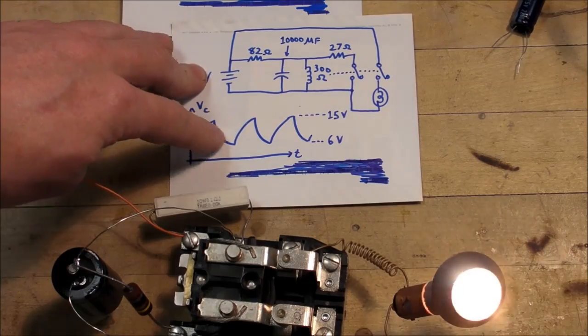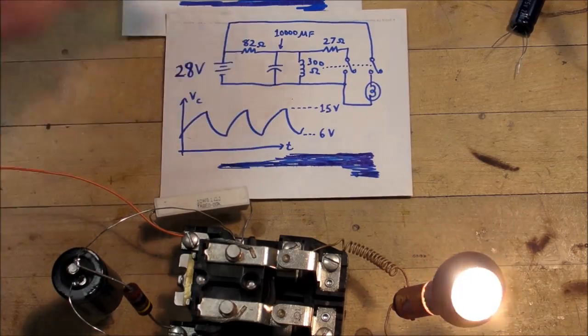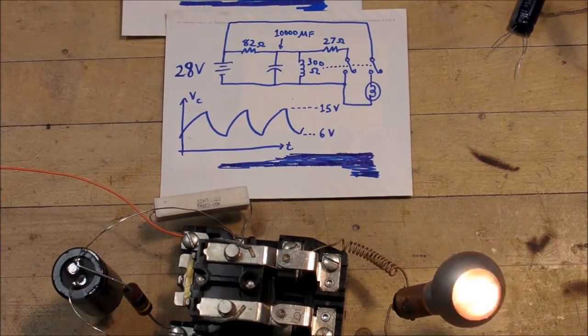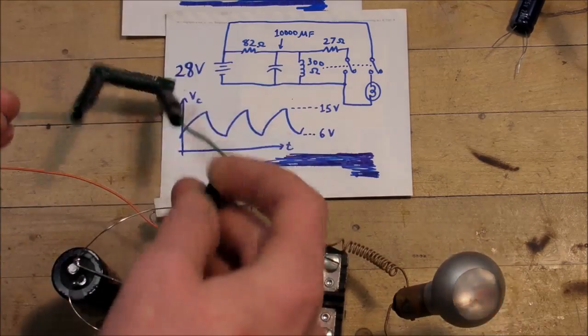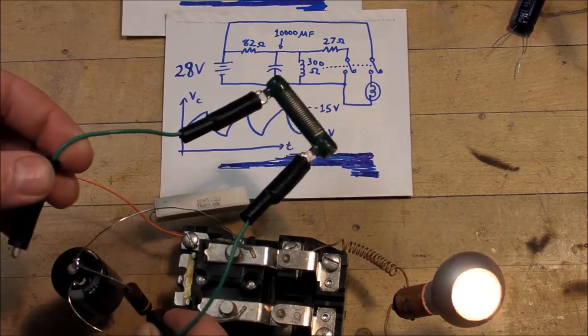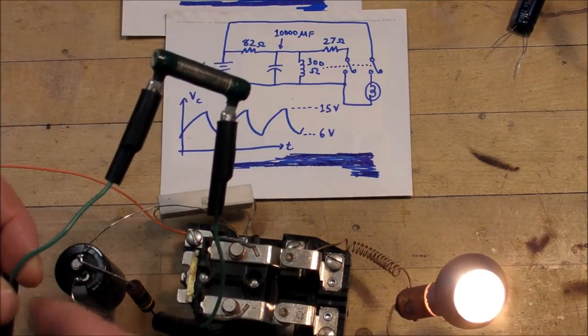In this case, I wanted to go smoothly up and then smoothly down. And in fact, I can short circuit that resistor, this 27 ohm, with a one ohm resistor.